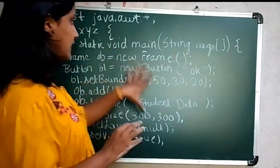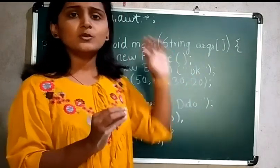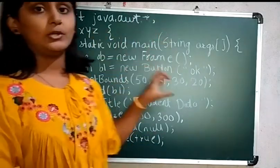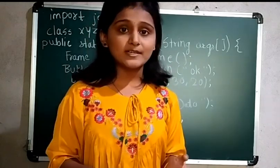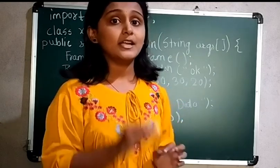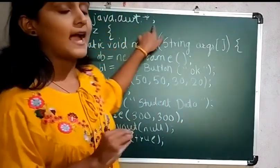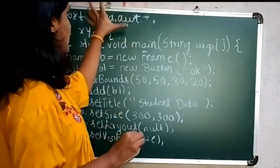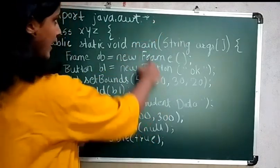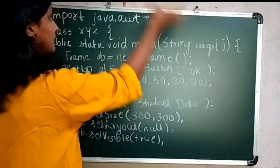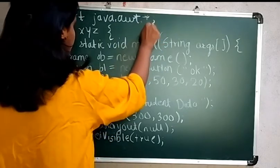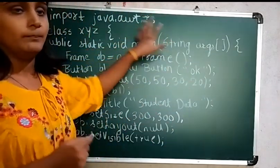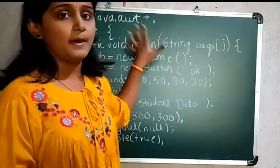Here I have taken an example of a button that we are going to see in the output. Using this same program you can try for other components. Before writing the program, all the AWT components — Frame, Button, etc. — come under the package 'import java.awt.*'. I used the asterisk so that all classes in the awt package are included, instead of importing each one separately.